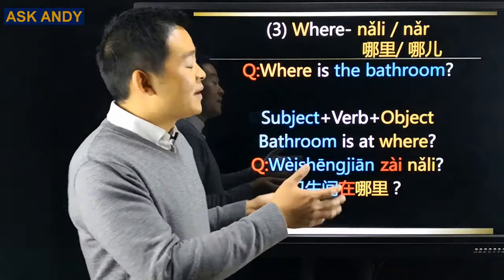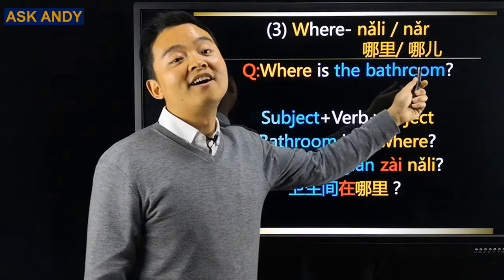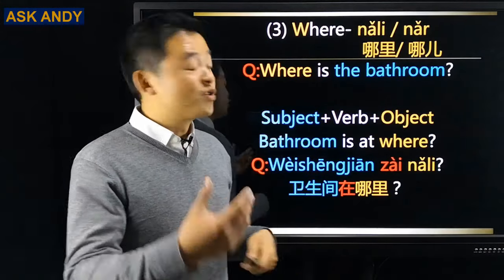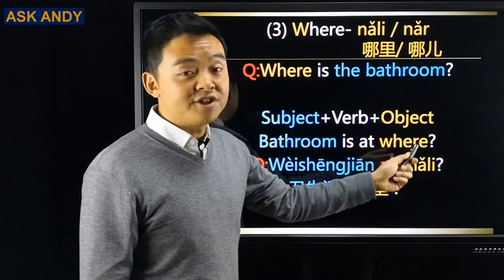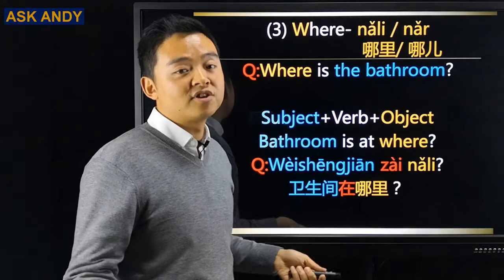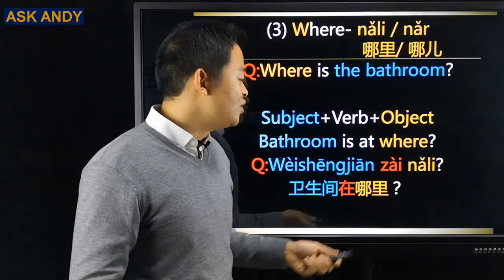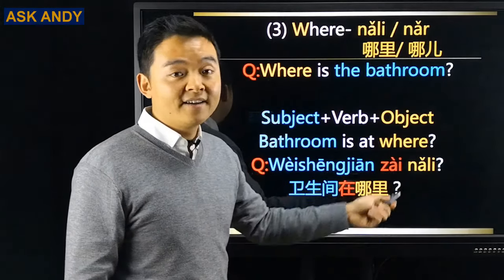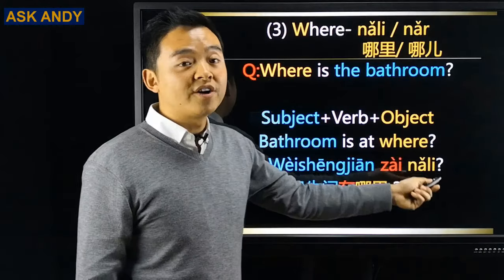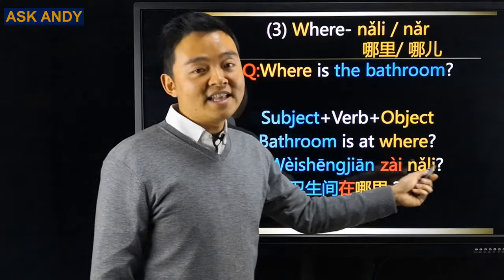'Where is the bathroom?' Where is 哪里 or 哪儿 — I prefer 哪里. Here, 'is at' acts as a verb in Chinese: 在. So the word order becomes 'bathroom is at where': 卫生间在哪里?